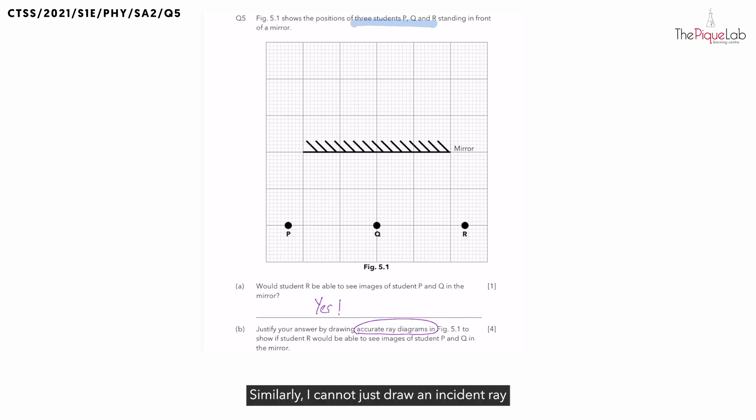Similarly, I cannot just draw an incident ray from P to the mirror, followed by drawing the normal, and finally drawing the reflected ray from the mirror to student R.